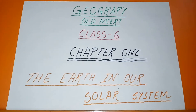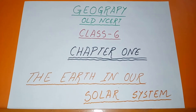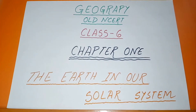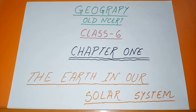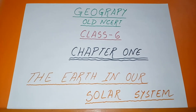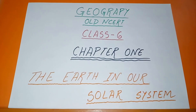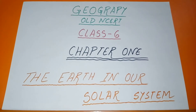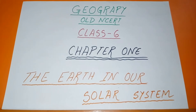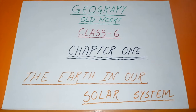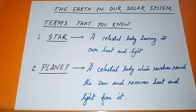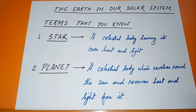My strategy will be: first I will deal with the terms that you already know. Then the key points and summaries will be provided to you. Then at the last, we will see the new terms you have learnt. So friends, let's start chapter one: The Earth in Our Solar System, Class 6 geography.